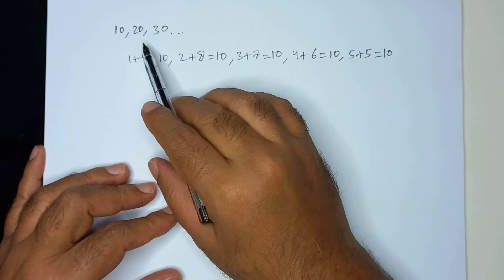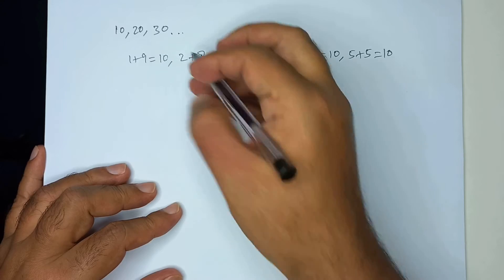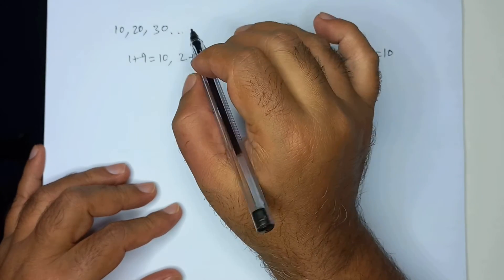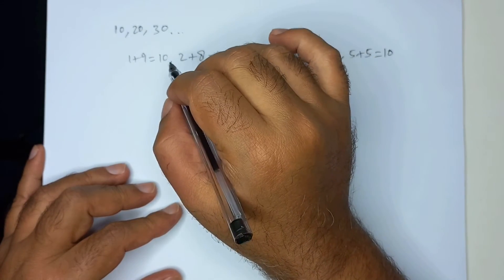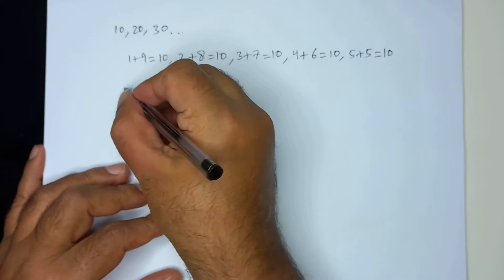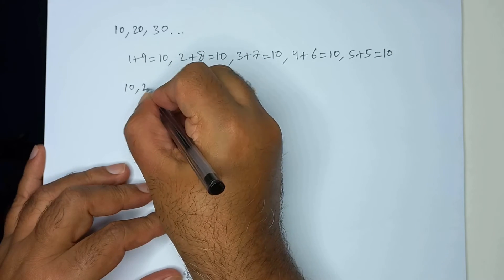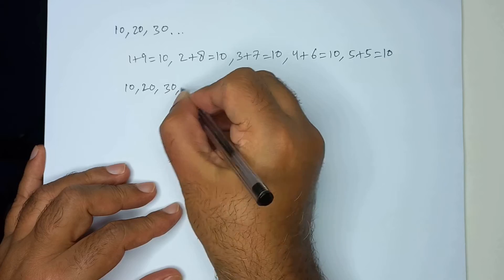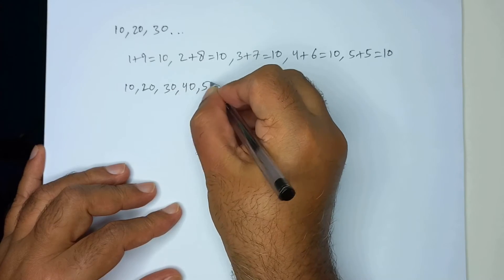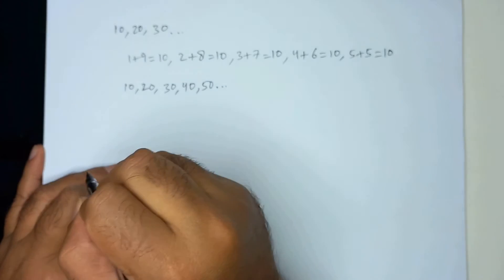Numbers like this 10, 20, 30, 40, they are very useful and we call these numbers 10, 20, let me write it here 10, 20, 30, 40, 50 and so on.